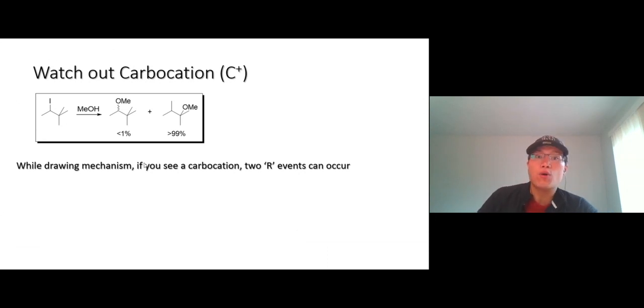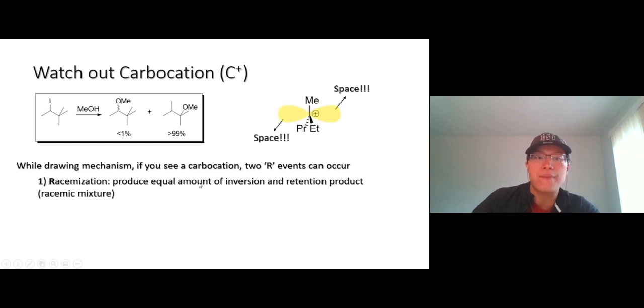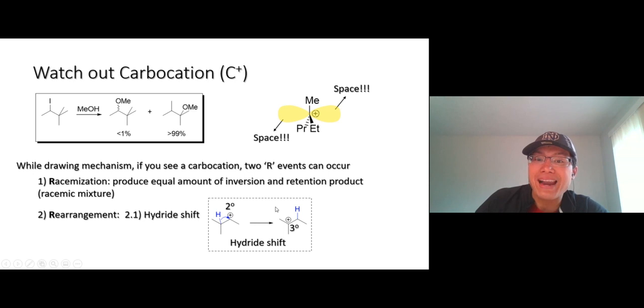Now for SN1 reaction, just a little bit more. When you see a carbocation, be aware - these two R events can occur, you have to be mindful. The first R we call racemization, which means that you will get an equal amount of inversion and retention product. You get both products because the carbocation is flat - you can attack from back and front side.